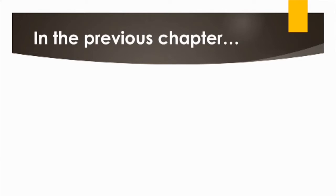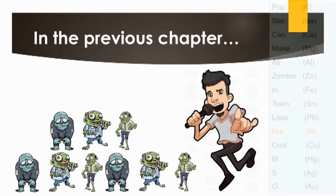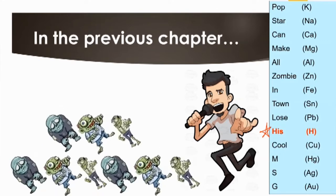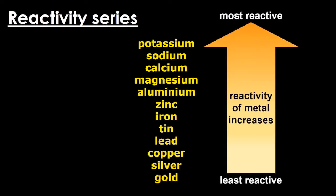Do you still remember the order of reactivity of the various metals? A hint: it has something to do with the picture — you see a pop star, you see some zombies. Using the first letters of the metals in the series, you can form mnemonics. Note that hydrogen, although not a metal, is still included in the reactivity series. Potassium, sodium, and calcium are the more reactive ones, whereas copper, silver, and gold — the precious metals — are the least reactive.